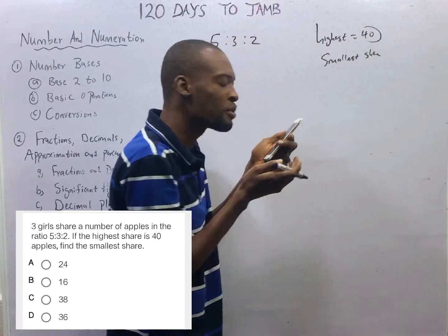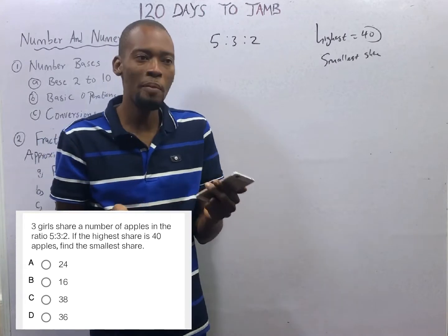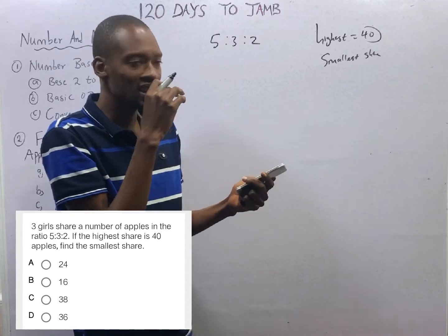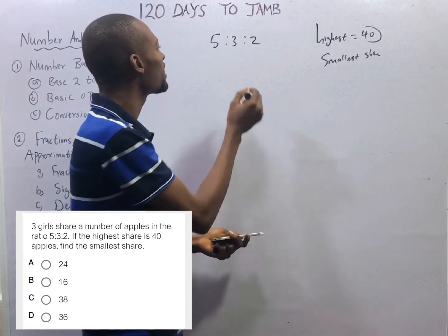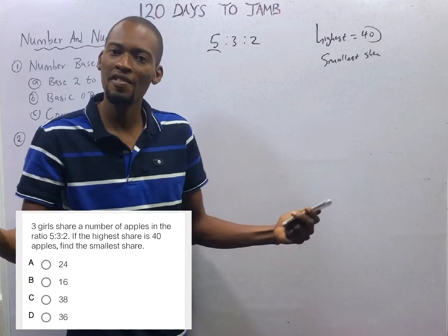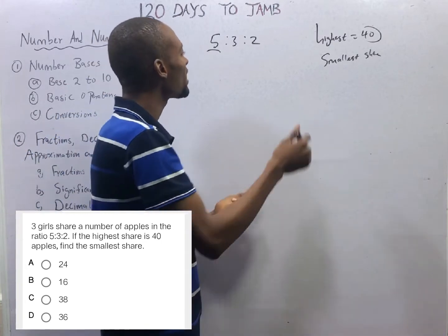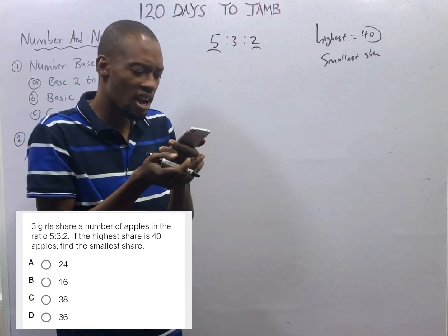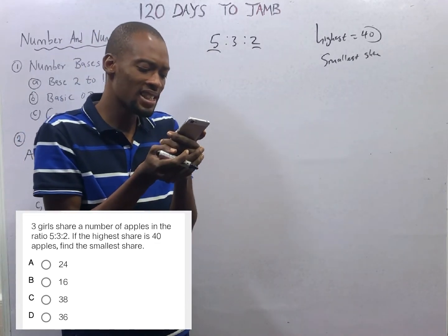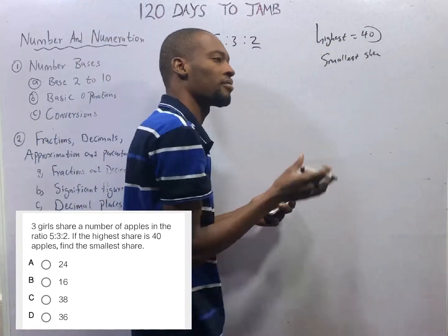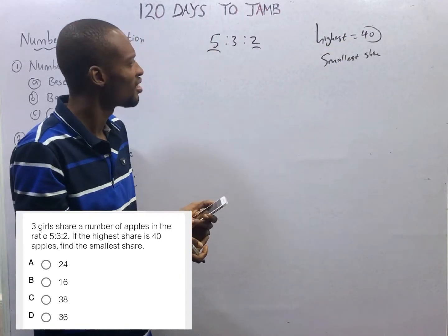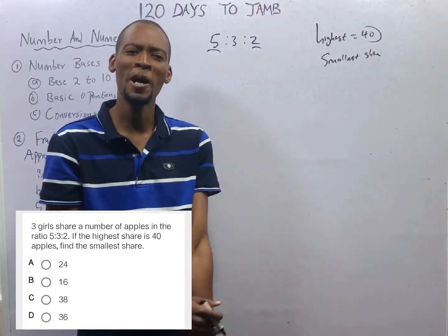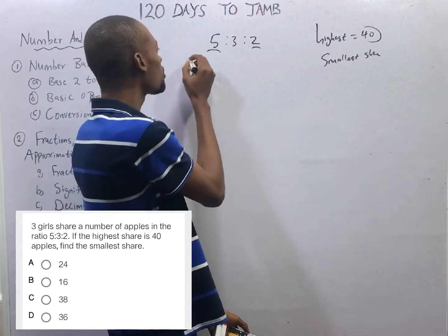If 3 beautiful guests shared apples in the ratio 5:3:2, the highest share is simply the girl who took ratio 5, and the smallest share is simply the person having ratio 2. That is the logic. And we are told that the person taking the highest share took 40.